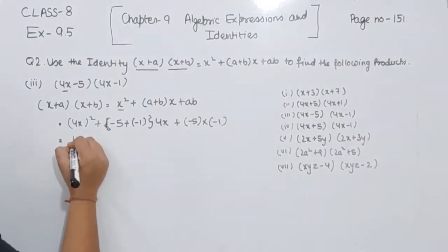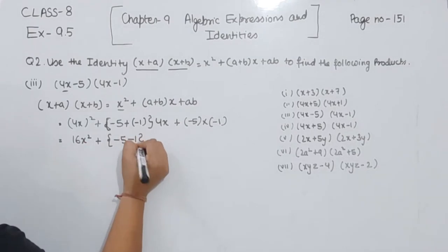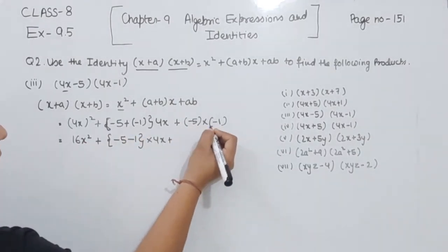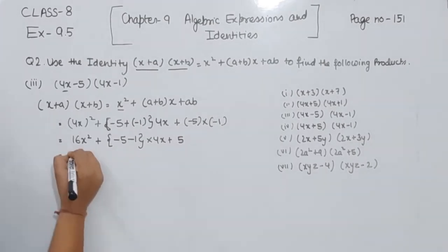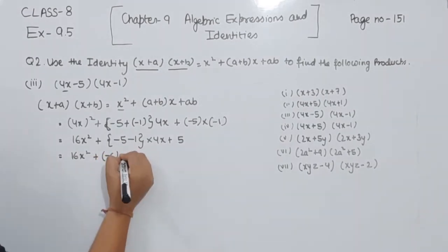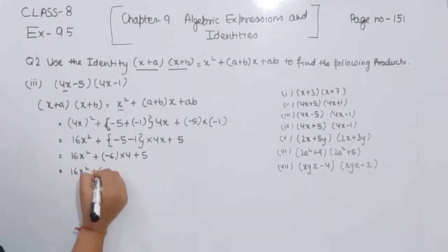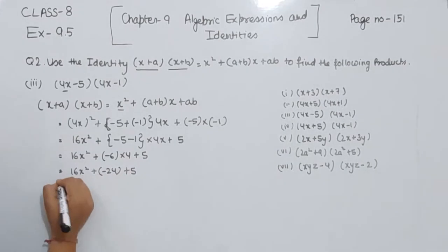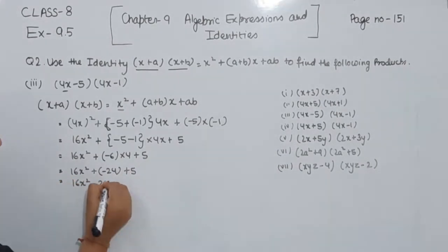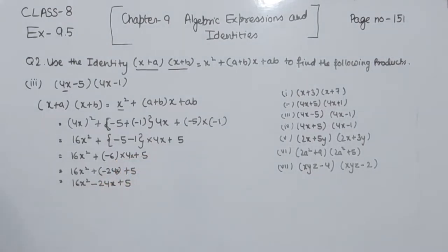Now solving: 4² = 16, so 16x² plus (−5 + −1) = −6, giving −6 × 4x = −24x, and (−5)(−1) = +5, since minus times minus is plus. So the solution for part 3 is 16x² − 24x + 5.